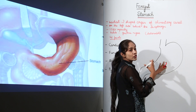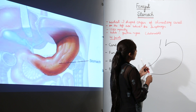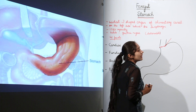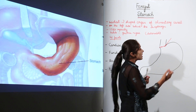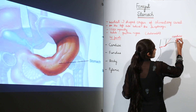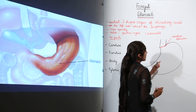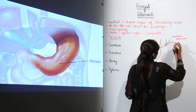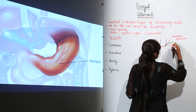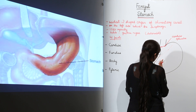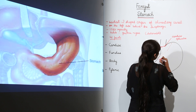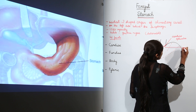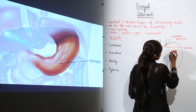This is the structure of the stomach, which is a J-shaped organ. We have a sphincter here which we call the gastroesophageal sphincter, or we can also call it the cardiac sphincter. Since there is a cardiac sphincter, the first region is the cardiac part of the stomach. Then we have the fundus region.